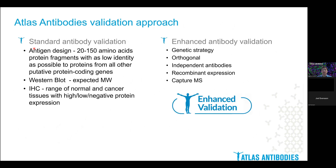At Atlas Antibodies, we use both standard and enhanced antibody validation when we develop our new products. First of all, I will concentrate on the standard antibody validation. We try to achieve antibody specificity already by a careful design of our antigens, where we use protein fragments between 20 to 150 amino acids long, choosing regions with as low identity as possible to other putative protein coding genes. We also validate antibodies in multiple applications and make sure that, for example, the Western blot gets the correct band size. In immunohistochemistry, we always use a range of normal and cancerous tissue with both high, low, and negative expression to ensure the proper sensitivity of the antibody. Different enhanced antibody validation strategies can also be applied, and we will come back to them shortly.